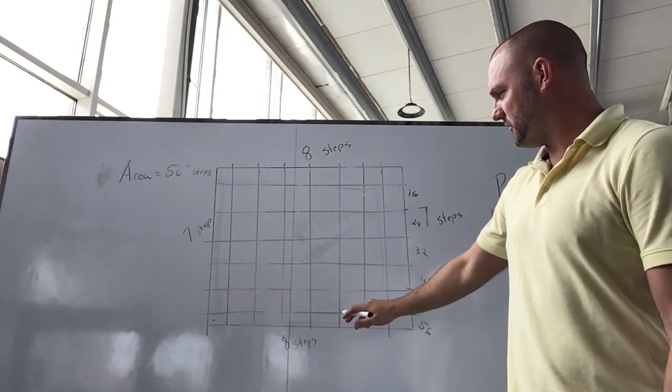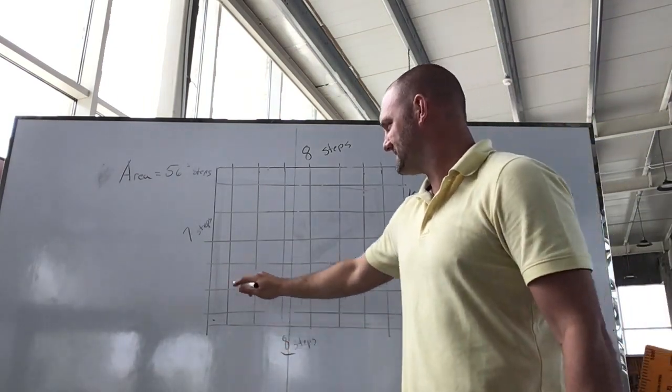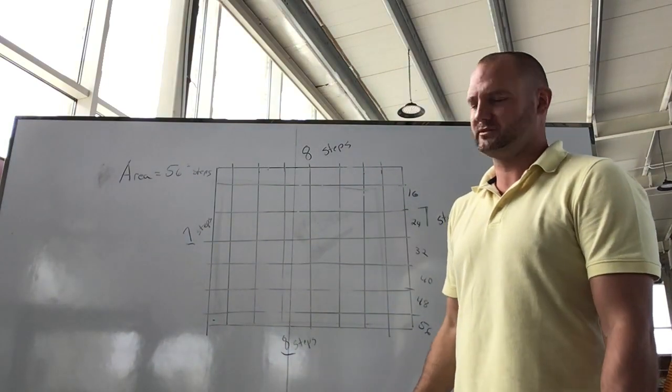You also might know that if we multiply 8 times 7, that's how many squares we get if you know your multiplication.